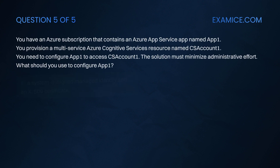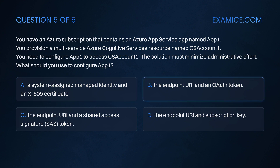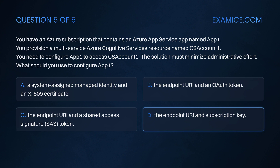Question 5. You have an Azure subscription that contains an Azure App Service app named App1. You provision a multi-service Azure Cognitive Services resource named CS Account1. You need to configure App1 to access CS Account1. The solution must minimize administrative effort. What should you use to configure App1? Option A: A system-assigned managed identity and an X509 certificate. Option B: The endpoint URI and an OAuth token. Option C: The endpoint URI and a shared access signature token. Option D: The endpoint URI and subscription key.